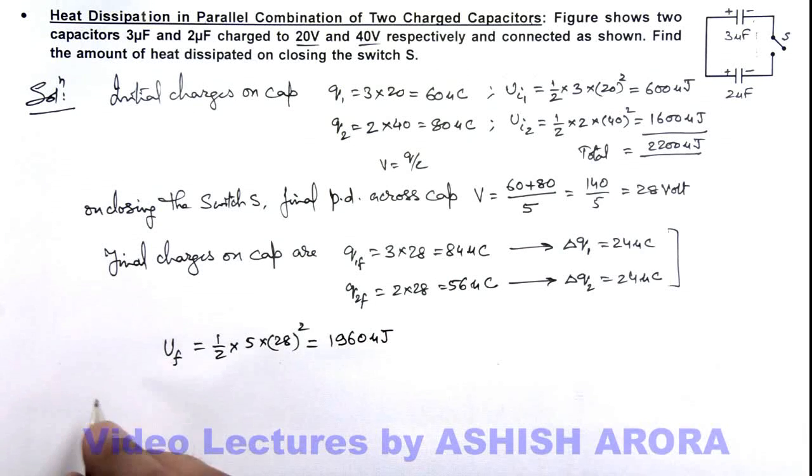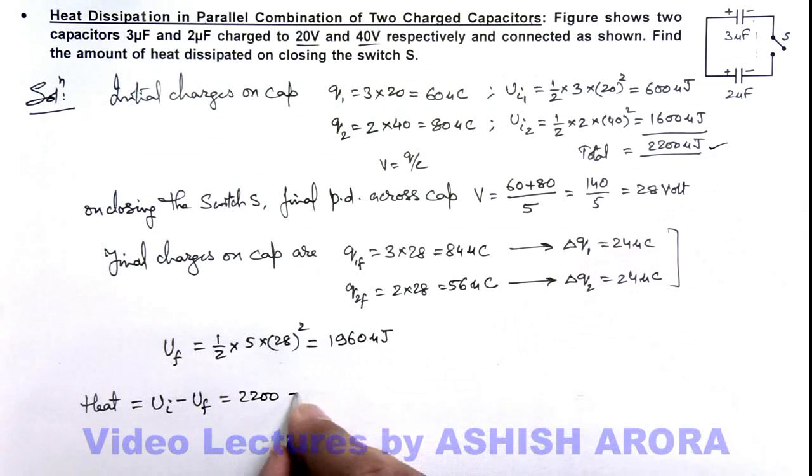Now, to calculate the heat dissipation: as there is no battery, heat dissipation can be written as the loss in energy stored in the capacitor, that is Ui - Uf. So 2200 microjoules, which was the initial energy, minus the final energy 1960 microjoules, gives us 240 microjoules. That is the answer to this problem.